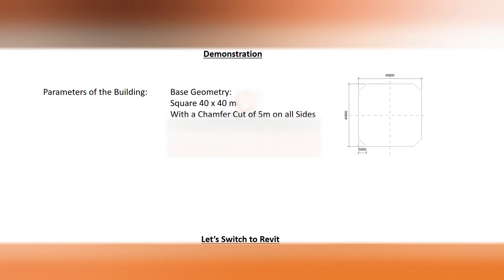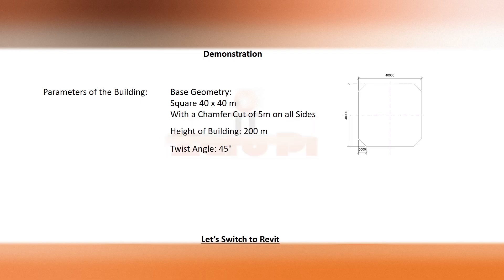The basic geometry of the building is a square with a size of 40 meters by 40 meters, with a chamfer cut of 5 meters on each of the edges. The height of the building should be 200 meters. The twisted angle should be 45 degrees, and the number of floors we need is 40. Let's switch to Revit and see how we can start.